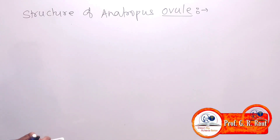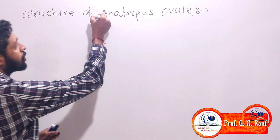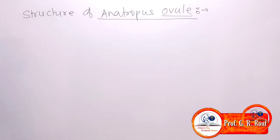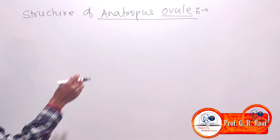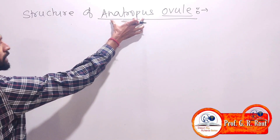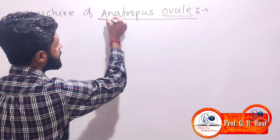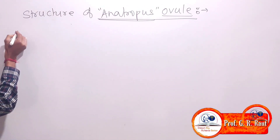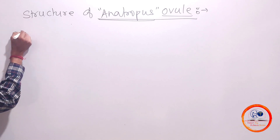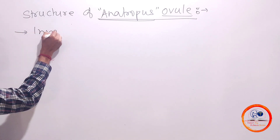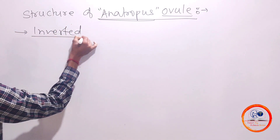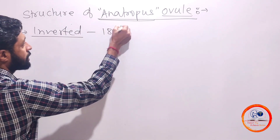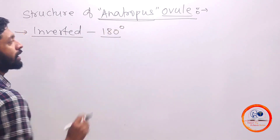The structure of anatropous ovule is present in angiosperms. Generally, ovules which are present in angiosperms are said to be anatropous ovules because the ovules present are inverted. The ovules will be present in an inverted form, that is they will be tilted by 180 degrees.